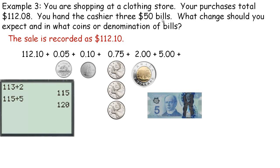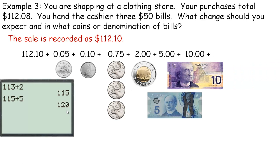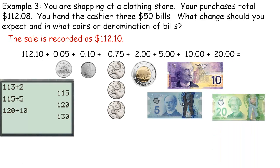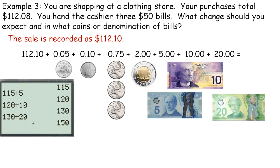Three fifties is $150.00, so we need to count up to $150. From $120, add a ten dollar bill to reach $130. Then add a twenty dollar bill to reach $150. The change you get back is: a nickel, a dime, three quarters, a toonie, a five dollar bill, a ten dollar bill, and a twenty dollar bill. Always start with the lowest denomination and work up — that's how you count change.